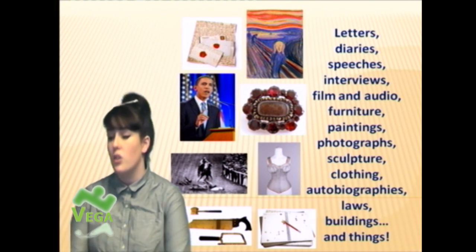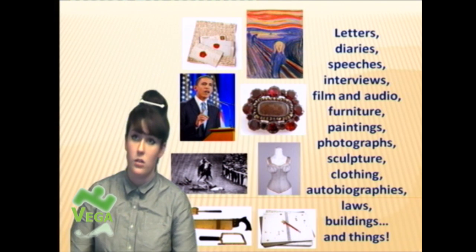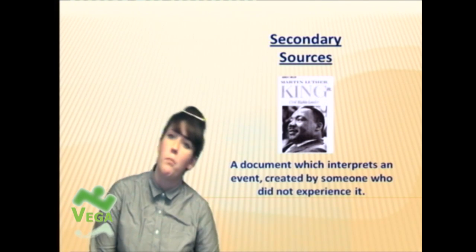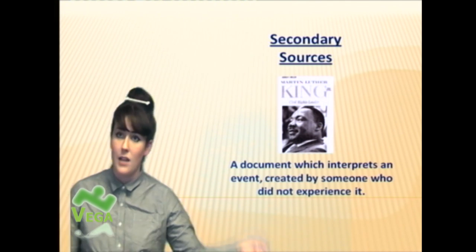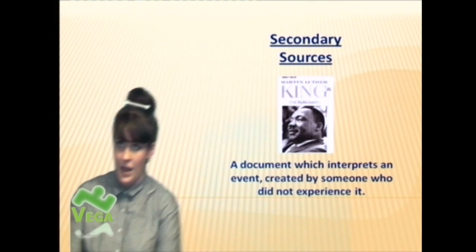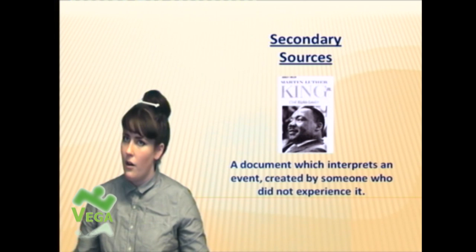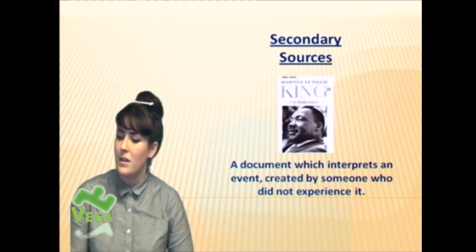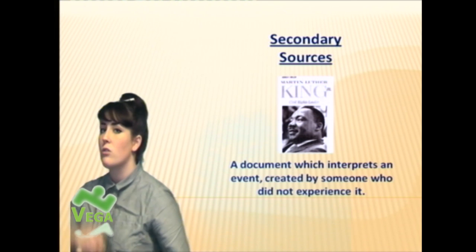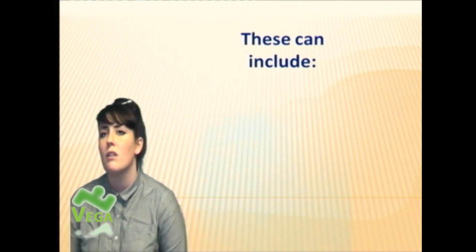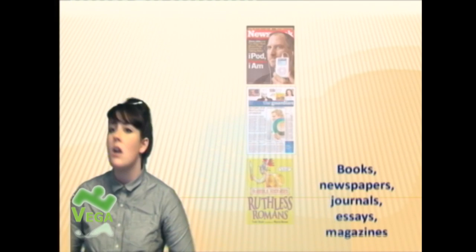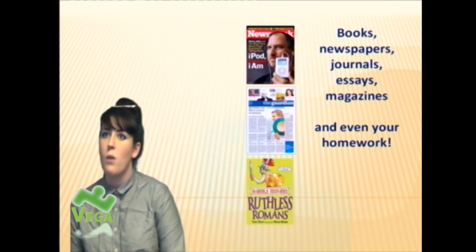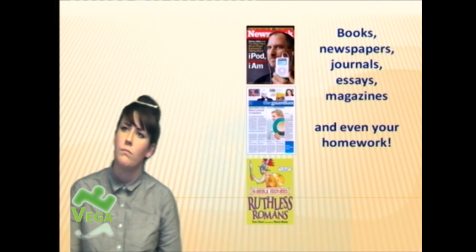Quite often for your research you use a lot of secondary resources, which is great. Secondary sources are a document which interprets an event, created by someone who did not experience it. So here is a book about Martin Luther King — it was produced many years after his death, by someone who wasn't there and didn't know him. It's someone looking at the historical events surrounding his life. Secondary resources can include books, newspapers, journals, essays, magazines, and even your homework sort of counts as a secondary source.